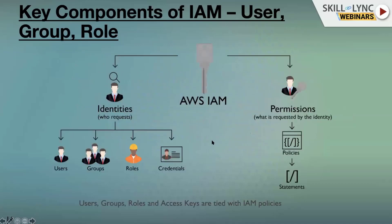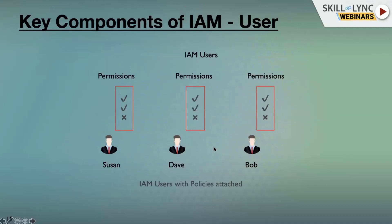IAM policies can be attached to any IAM entities — users, groups, and roles. Policies are JSON statements where we define what actions are authorized and what conditions apply. IAM user is targeted to particular users; we write a policy and attach it to the user. Here there are three users — Susan, Dave, and Bob — each referred to as IAM users, and we can attach policies to each individual user.